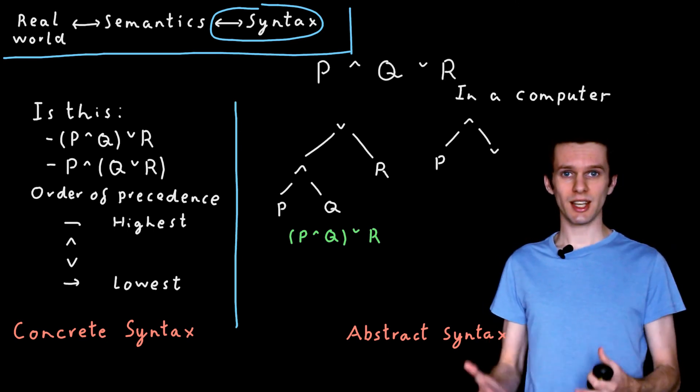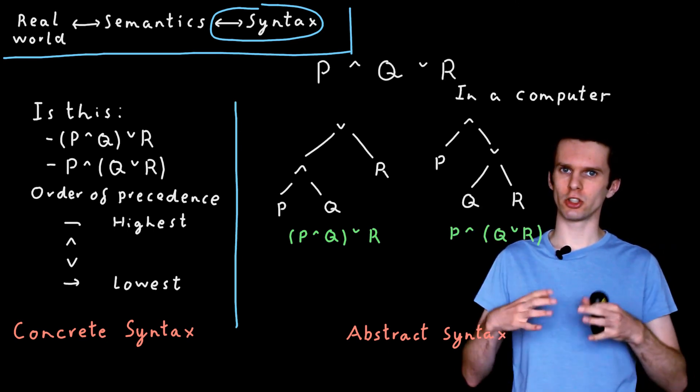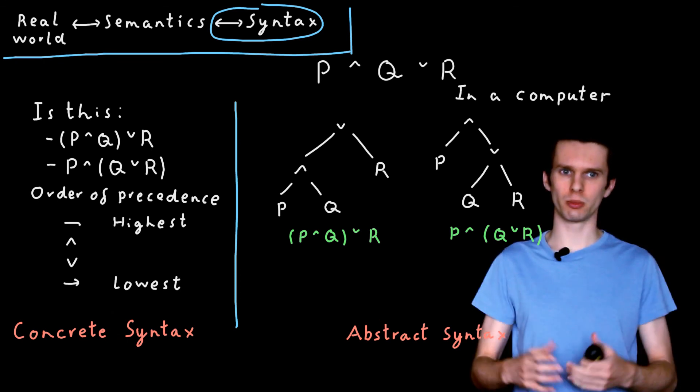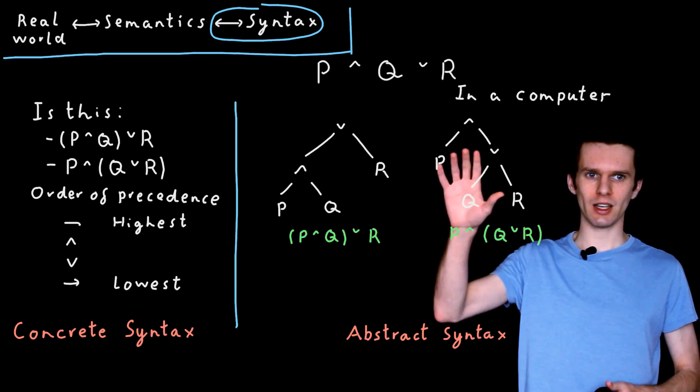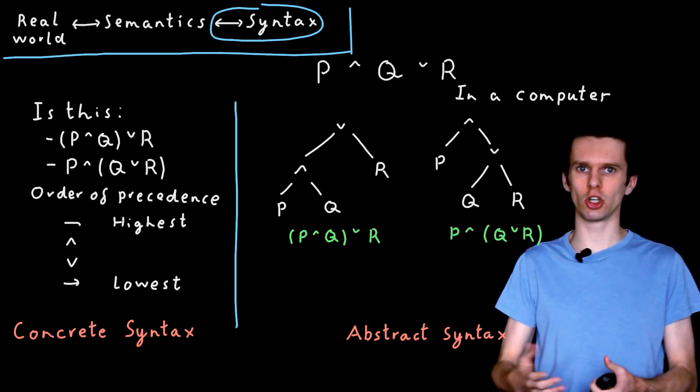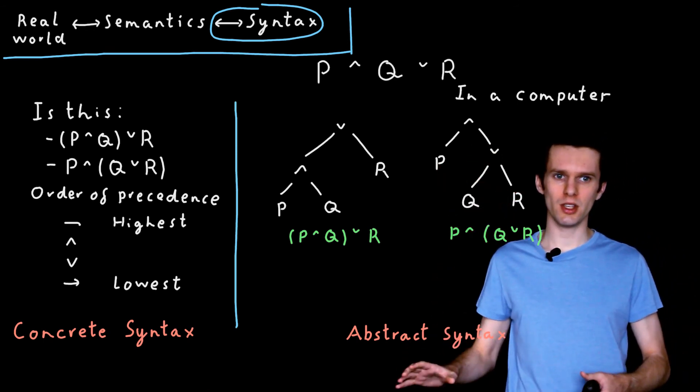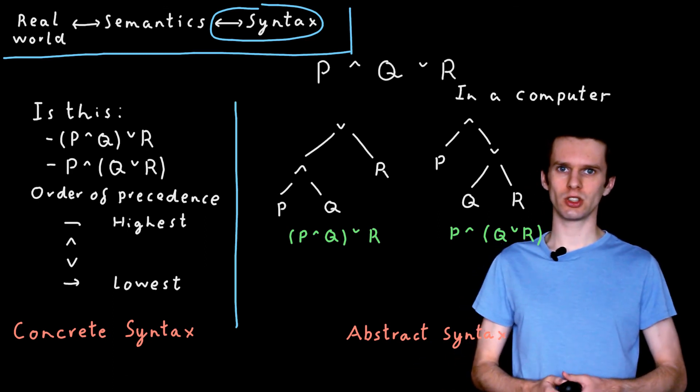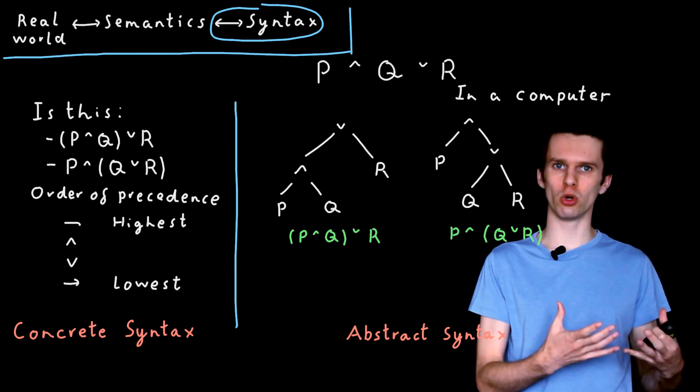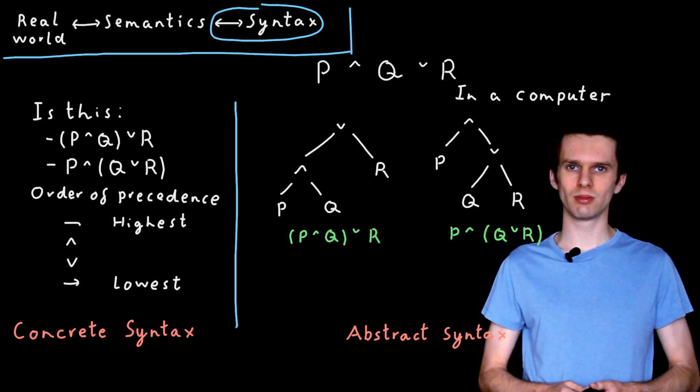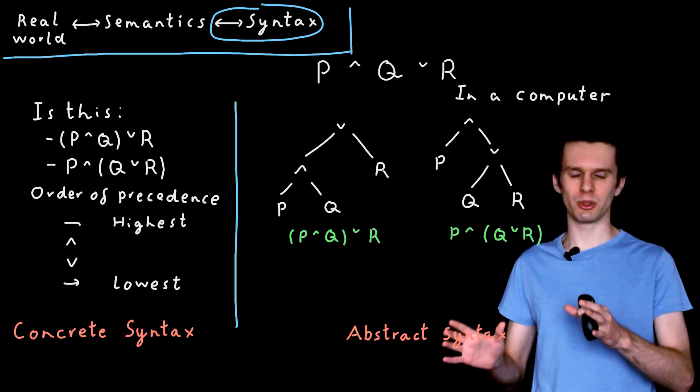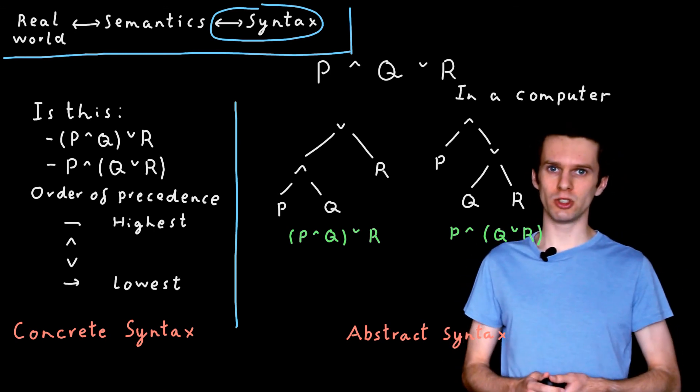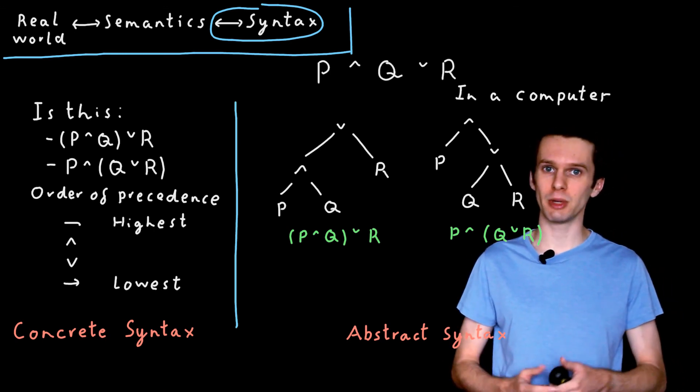And if we wanted to represent the second sentence with the brackets around the Q or R part of the proposition, well, we can do that as well. This tree here now has AND as the top level operator, with P as one of its propositions, and the proposition Q or R as the second. And this kind of representation, this abstract representation, is really useful in a computer for efficiency and for automation.